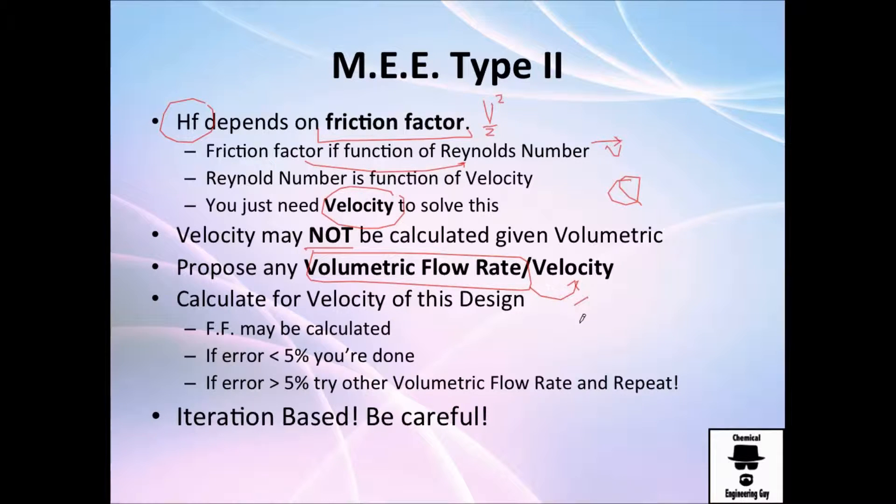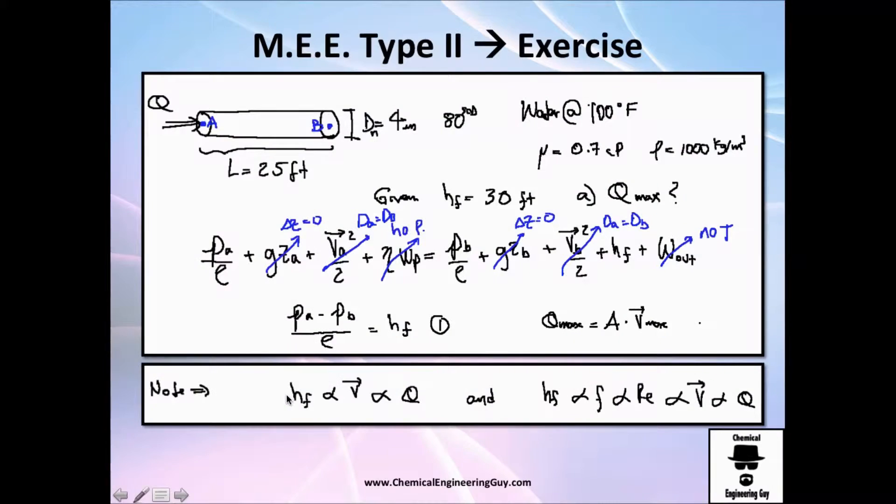We are going to give several volumetric flow rates and calculate velocities. With these velocities we are going to calculate left side of the mechanical energy equation and calculate right side of the mechanical energy equation. If they make sense, we are set to go. Just be sure to be very low in error, if you have small error you are done, if you have high error you must retry.